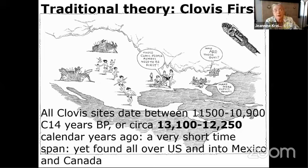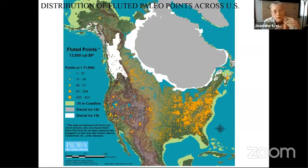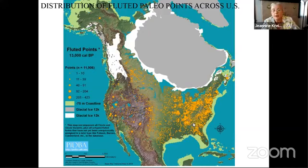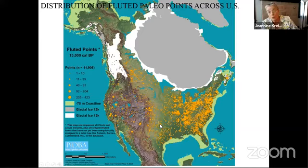Here's a great map where researchers went county by county across the United States and Canada, counting how many Clovis points have been documented in each county. Where's the biggest concentration? In the Eastern United States. But where are the oldest Clovis points? They're in Texas — specifically the Friedkin site and other Texas sites. So the oldest Clovis points are there, while the most numerous are in the east. All very interesting.